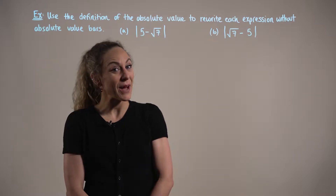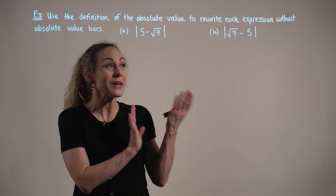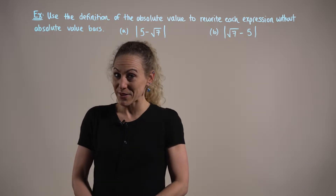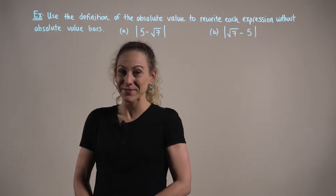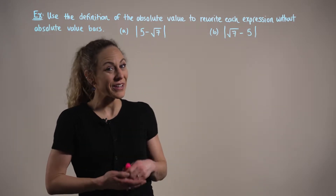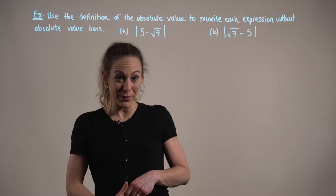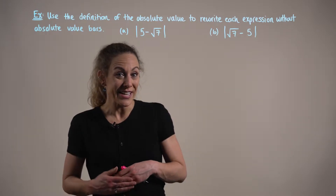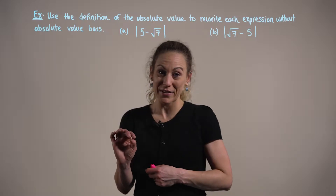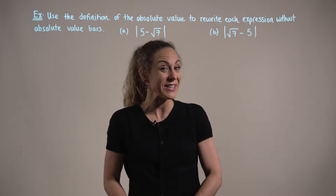Use the definition of the absolute value to rewrite each of these given expressions without the absolute value bars. In part A, we're given the absolute value of 5 minus the square root of 7. And in part B, we're given the absolute value of the square root of 7 minus 5.